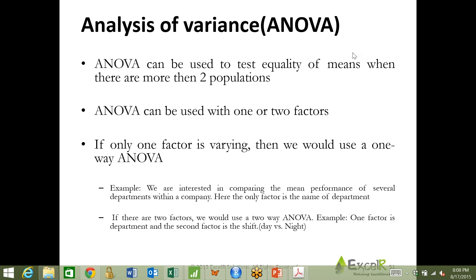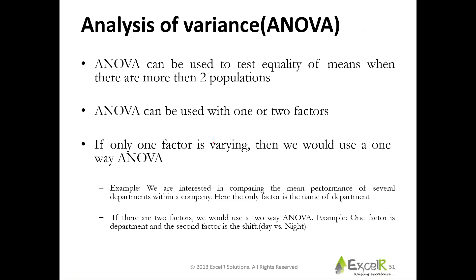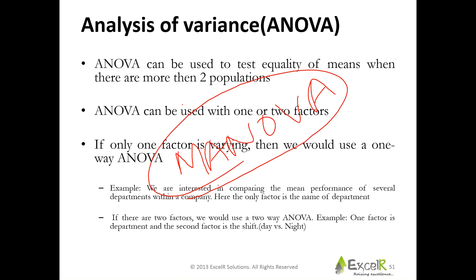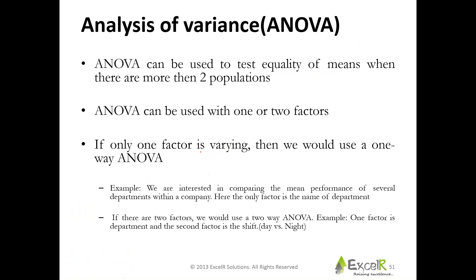Enoch has a question: if there are more than two factors, is it still two-way ANOVA? If there are more than two factors, you call that as MANOVA — multivariate analysis of variance. It's a different concept and considered to be slightly complex. So we'll not get into that, but if you have more than two factors, you call that as MANOVA.